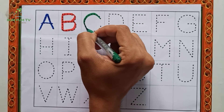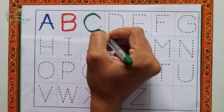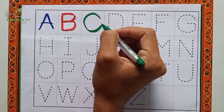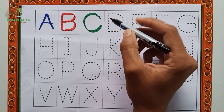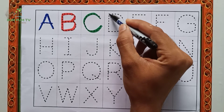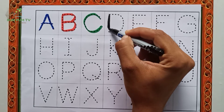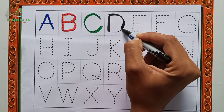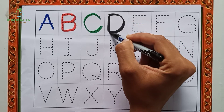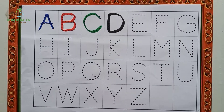A, B, C, D, E, F, G, H, I, J, K, L, M, N, O, P, Q, R, S, T, U, V, W, X, Y, and Z. Now I know my ABCs, next time won't you sing with me?